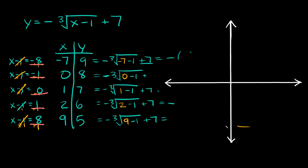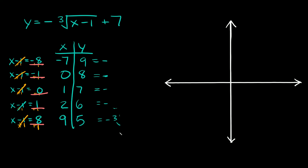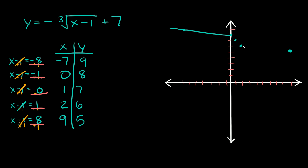Now I'm going to make some room for our graph. Our x values go from negative 7 to positive 9, and our y values go from 5 to 9. So we plot: negative 7, 9 is right there; 0, 8 is right there; 1, 7 is right there; 2, 6 is right there; and 9, 5 is right there. Then we connect the dots — there's our little jog — and that's why we graph these x values symmetrically. Boom, boom, boom. And there's your graph.